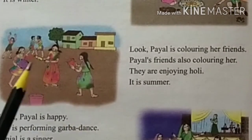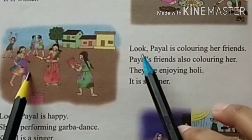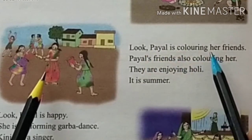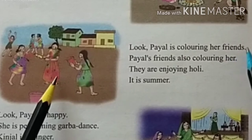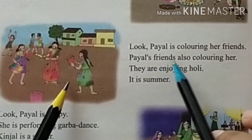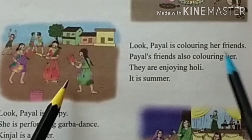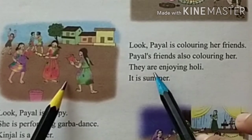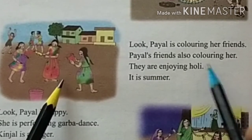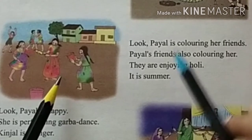Look at the next picture. Look. Pile is coloring her friends. Pile's friends are also coloring her. They are enjoying Holi. It is summer.